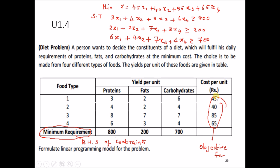What you can see is this will be the profit or the cost per unit. Whenever you see cost per unit or profit, we can consider that as the objective function.